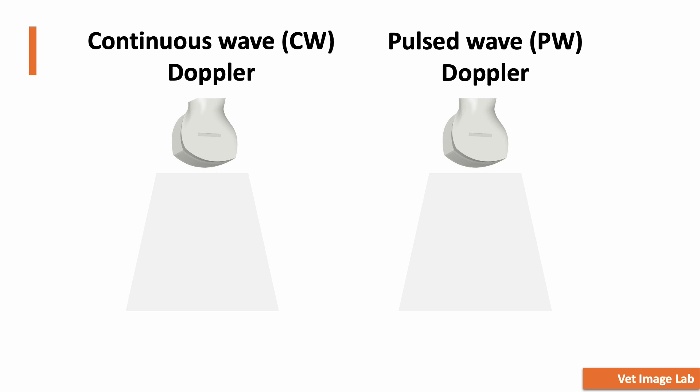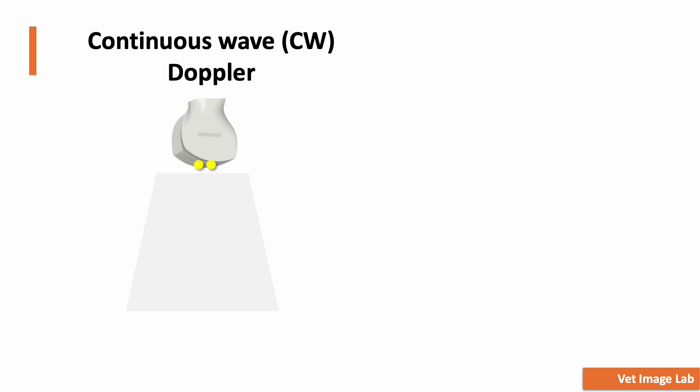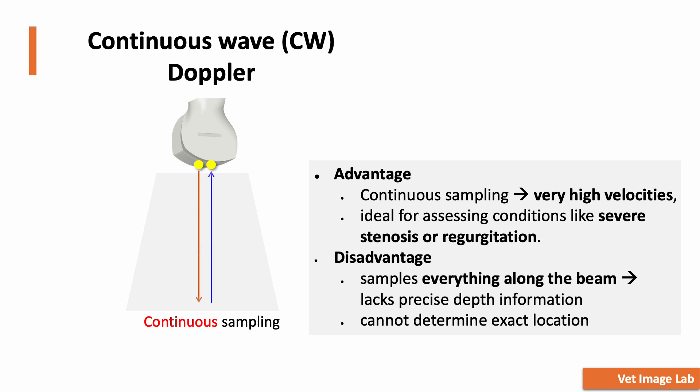Let's talk about continuous wave, or CW, Doppler first. CW Doppler uses two crystals — one continuously sending ultrasound waves and the other continuously receiving them. Because it continuously measures all blood flow along the beam, it can detect very high velocities, making it ideal for assessing conditions like severe stenosis or regurgitation. However, since it samples everything along the beam, it lacks precise depth information, meaning we cannot pinpoint exactly where the velocity is coming from.